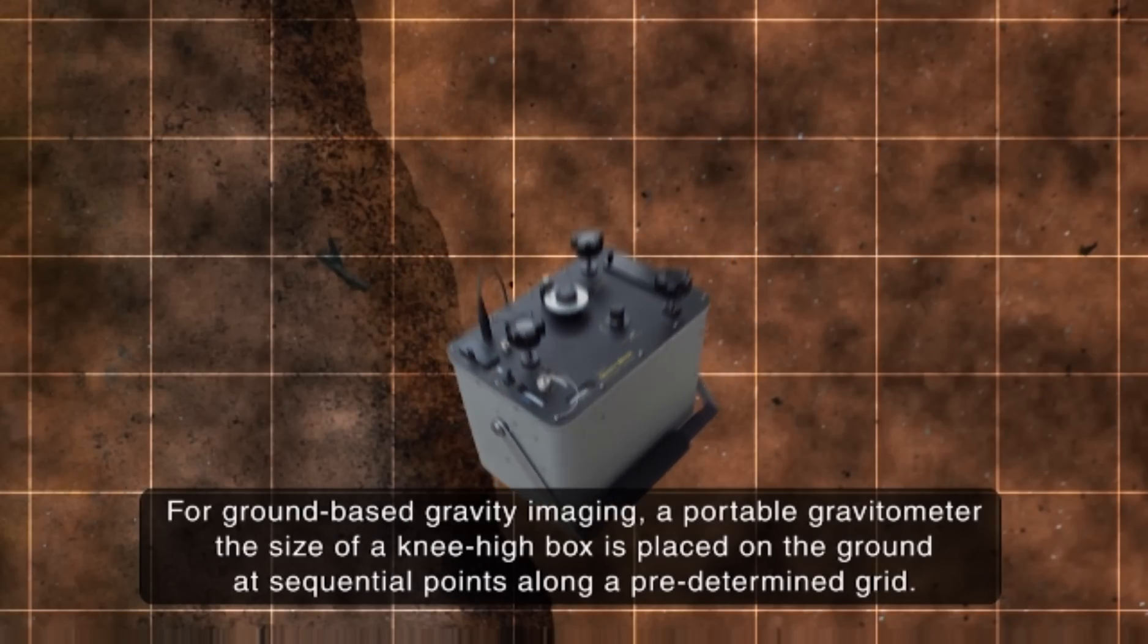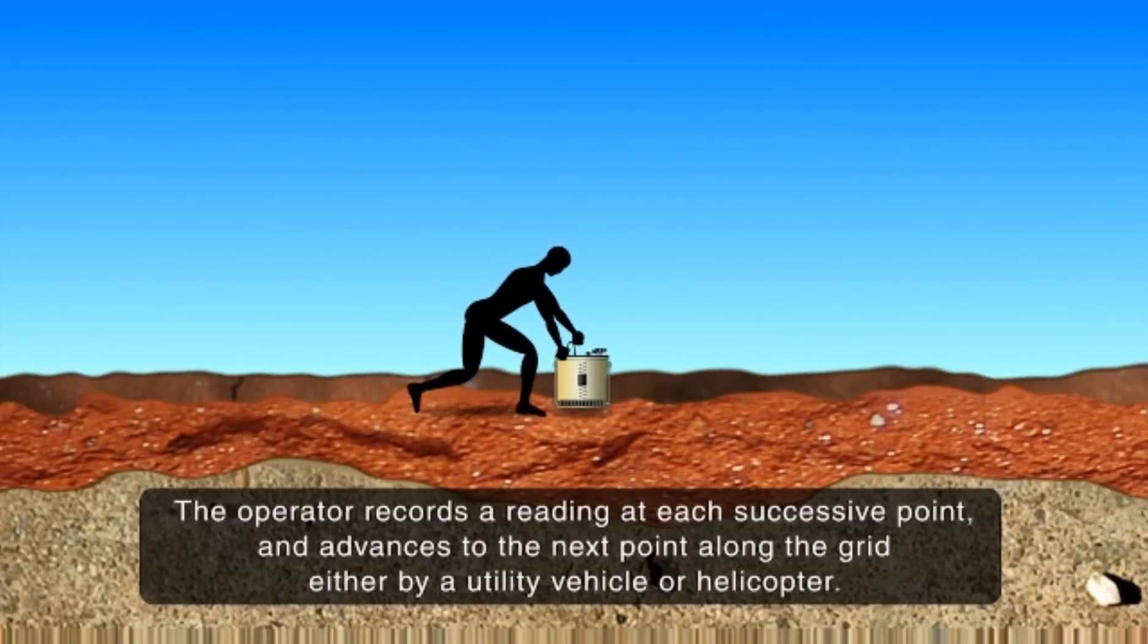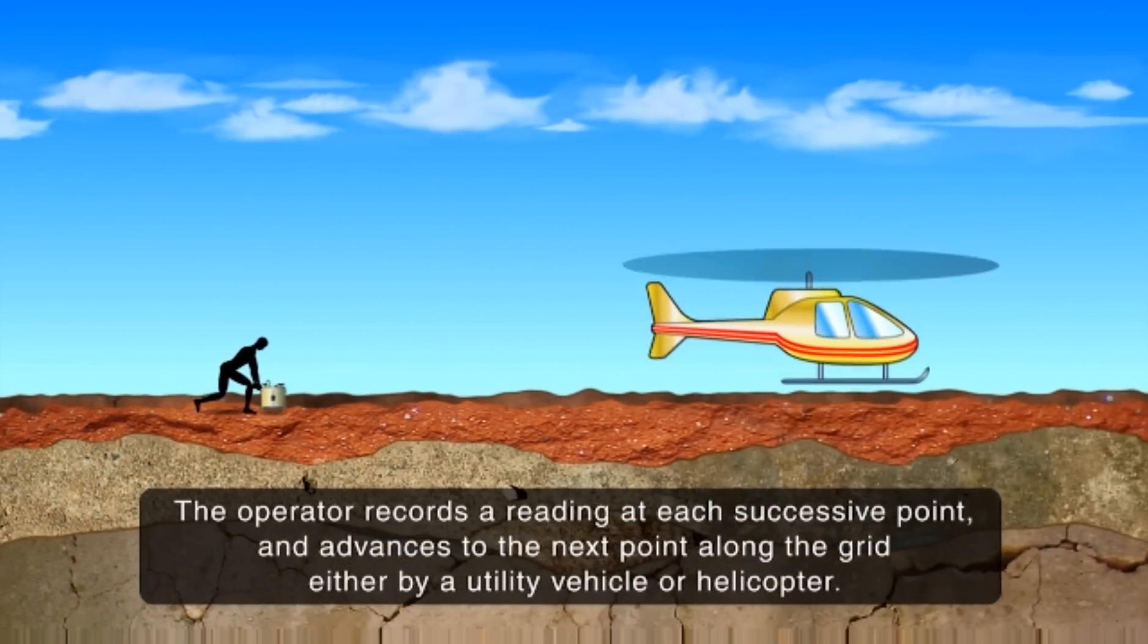For ground-based gravity imaging, a portable gravitometer the size of a knee-high box is placed on the ground at sequential points along a predetermined grid. The operator records a reading at each successive point and advances to the next point along the grid either via a utility vehicle or helicopter.